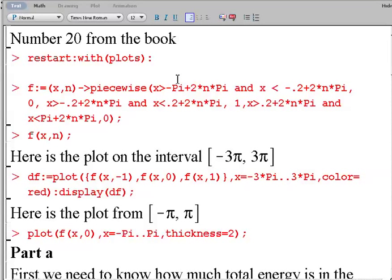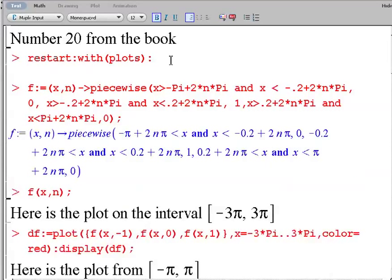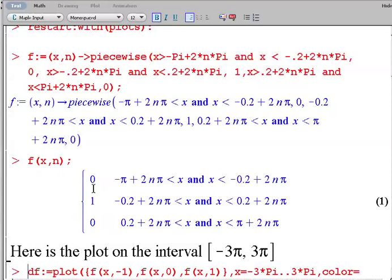Okay, so let's look at part a on number 20 from the book. First we'll do a restart. Let's just get an idea of what our function looks like. I've defined our function to be of two variables x and n so that I can plot multiple iterations of the pulse train if I want. So f of x,n is going to look like this where n just tells me how many periods I want to repeat.